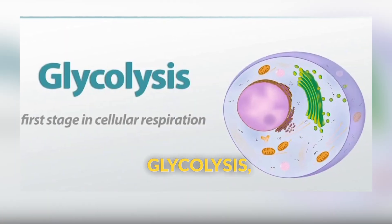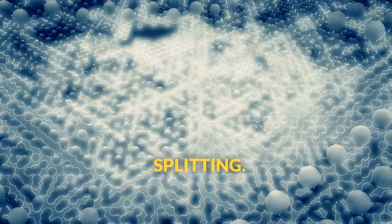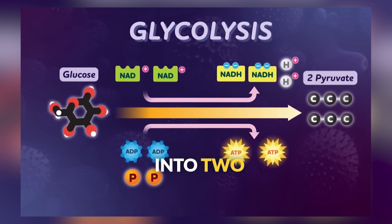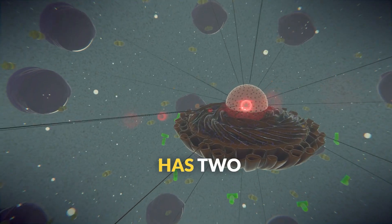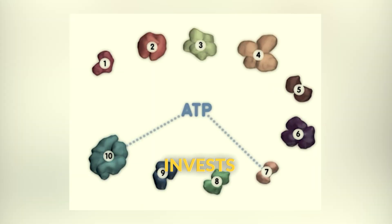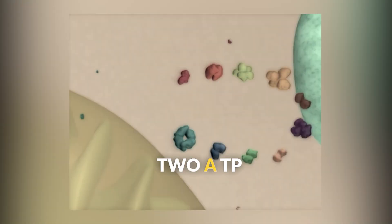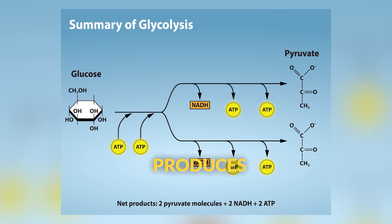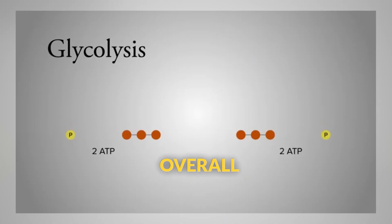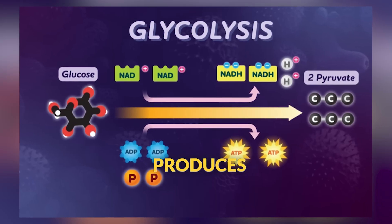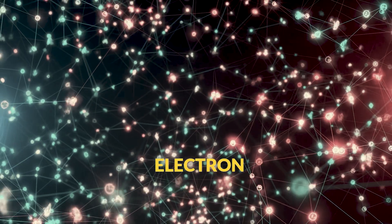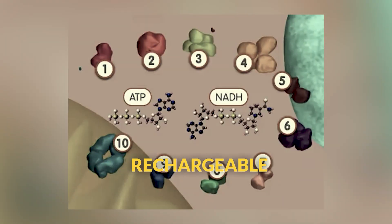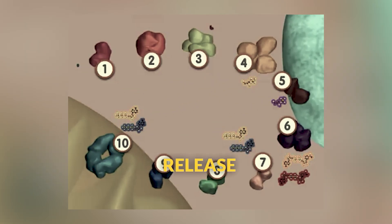Stage one is glycolysis, which literally means sugar splitting. This happens in the cell's cytoplasm, outside the mitochondria, and breaks one glucose molecule into two smaller pyruvate molecules. Glycolysis has two phases. First, the cell actually invests or spends two ATP molecules to get the process started — like spending money to make money. Then the payoff phase produces four ATP molecules for an overall net gain of two. Glycolysis also produces NADH, an electron carrier that will be crucial in later stages. Think of NADH like a rechargeable battery that gets charged up here and will release its energy later.